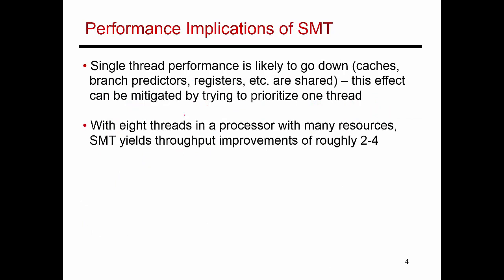Just to recap: with SMT, you can increase the number of threads being supported by a single core. Having multiple threads inject instructions into the pipeline increases your chances of utilizing all your ALUs. It increases the overall aggregate IPC, but each thread will see somewhat lower IPC than if it ran by itself, because it is sharing its caches, branch predictors, and all other resources among the other threads.